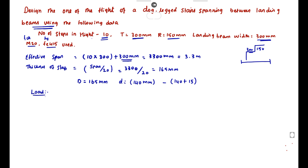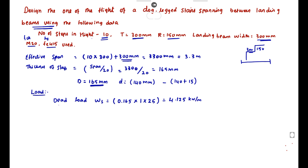Now we can calculate the loads, then find the moment and area of steel reinforcement. First, the dead load on slope: Ws equals 0.165 (overall depth) into 1 meter into 25 kN/m³ (unit weight of concrete), giving Ws equals 4.125 kN/m. Since this is a staircase on a slope, we need to convert this to horizontal distance.